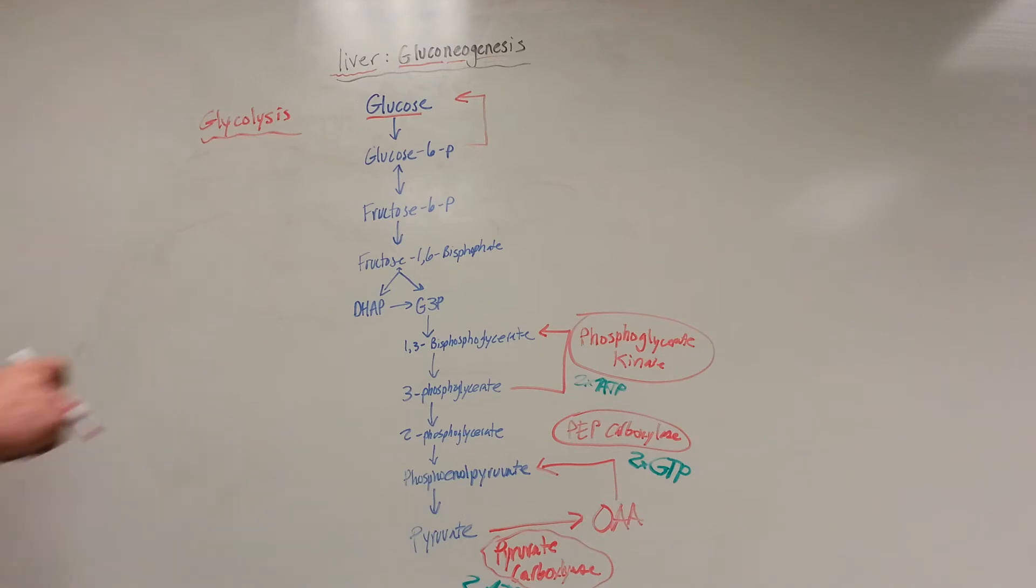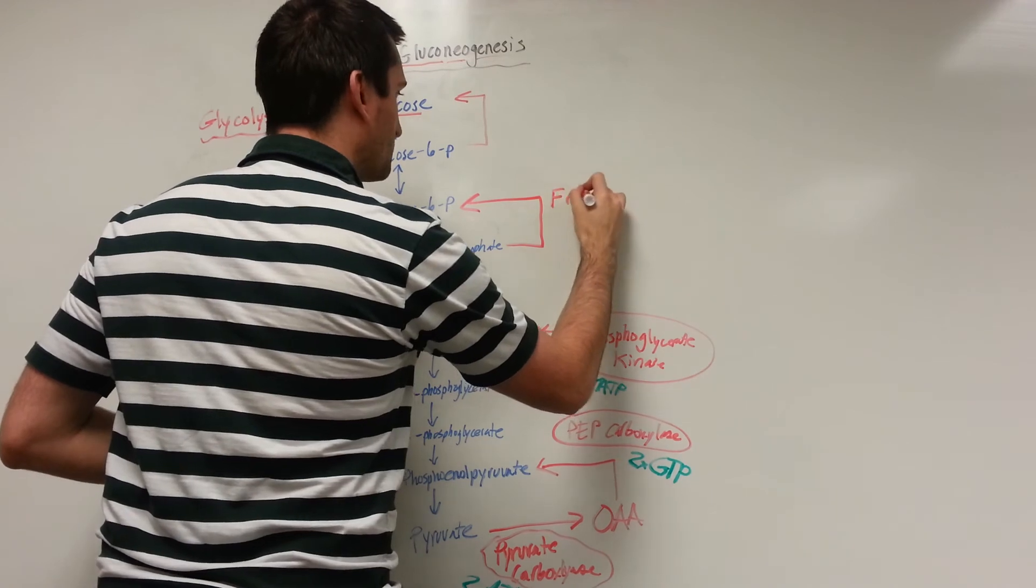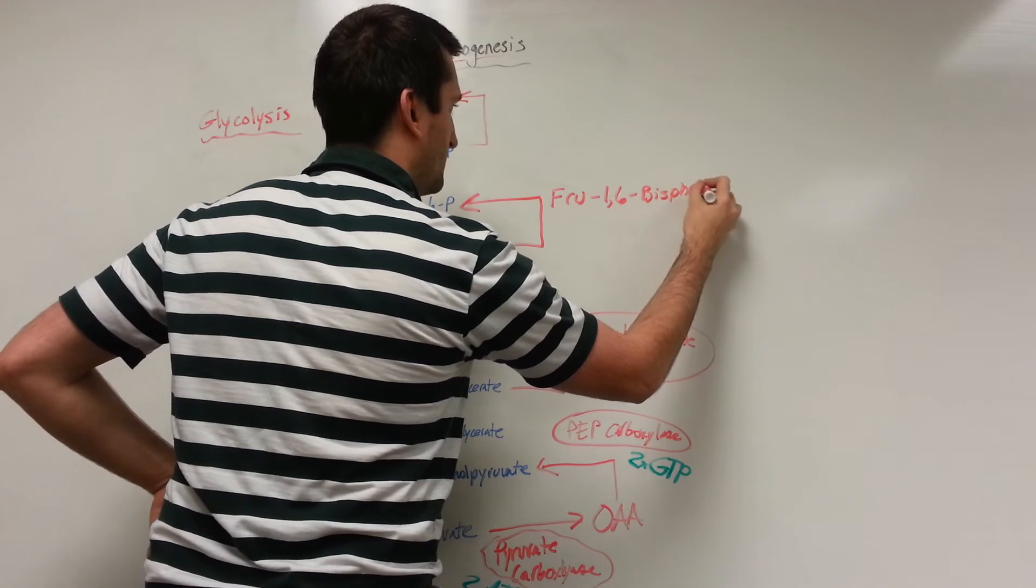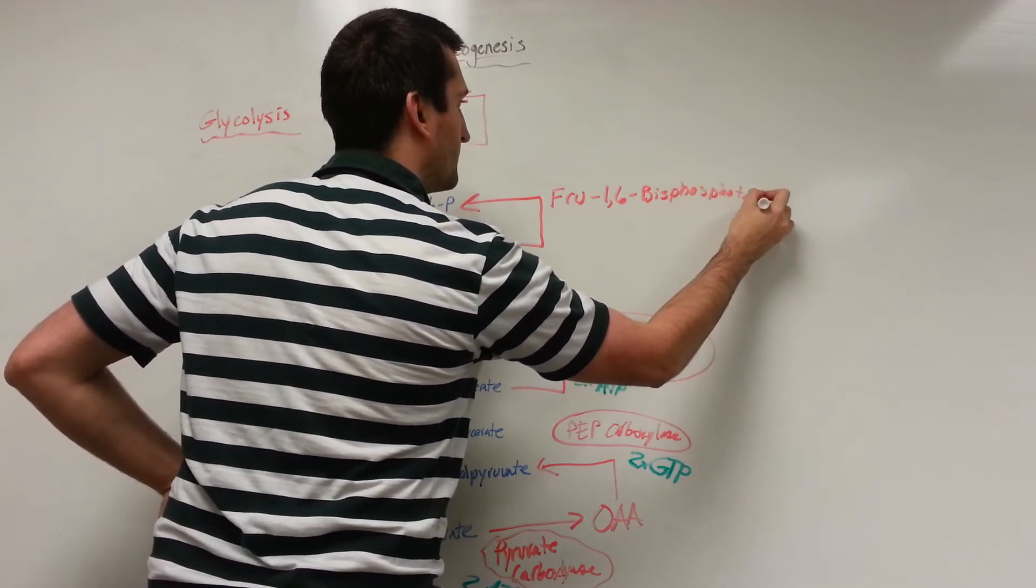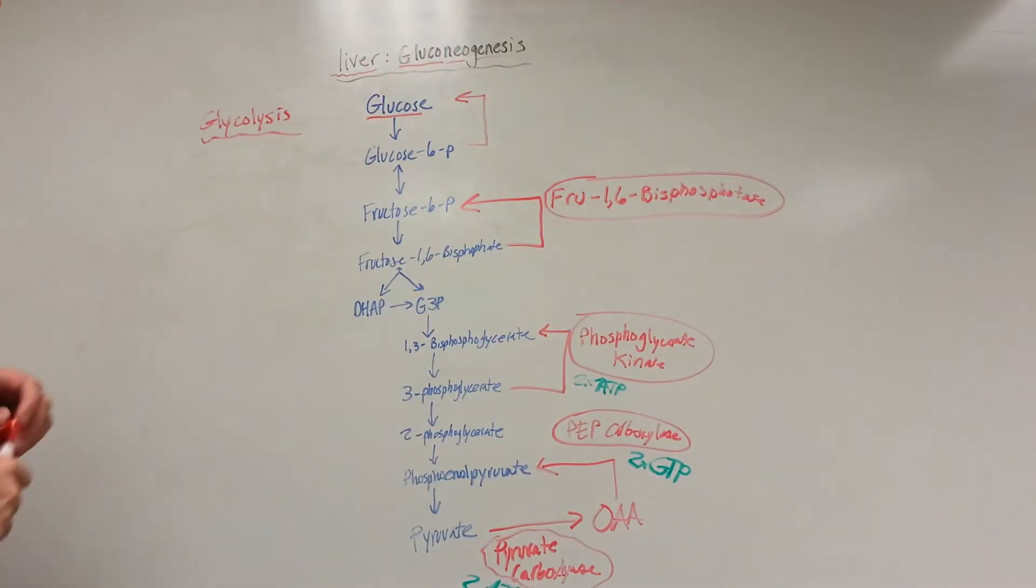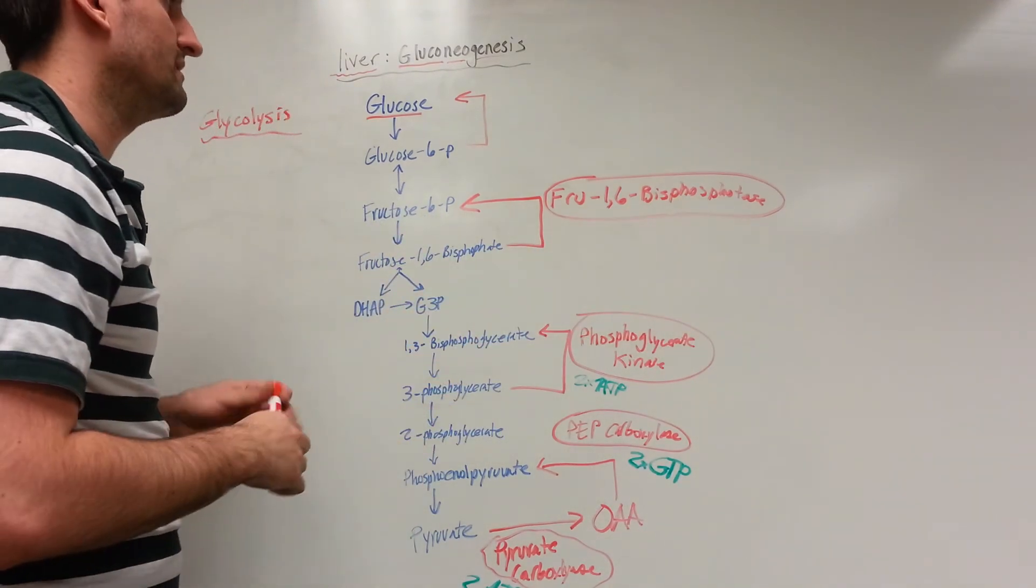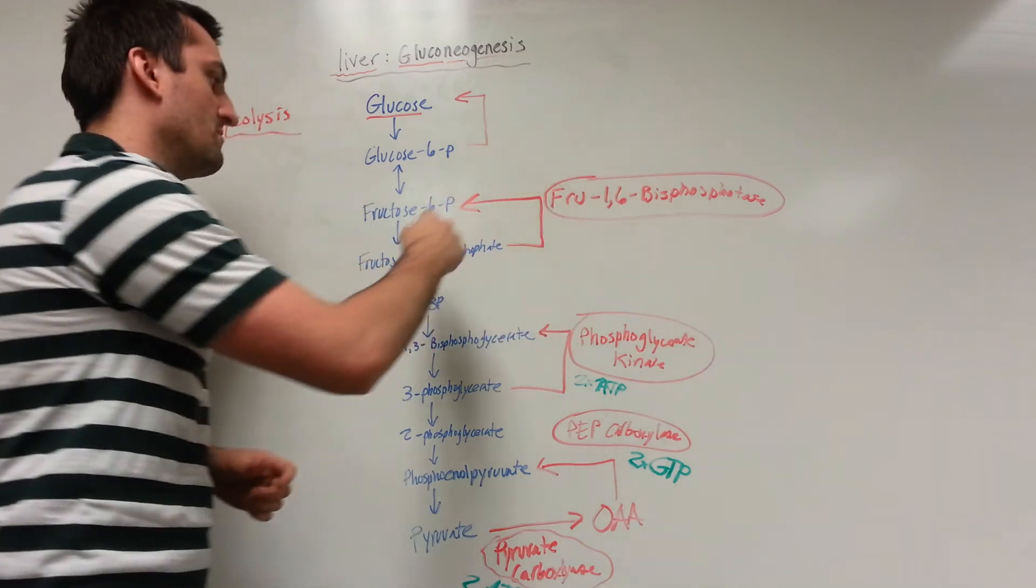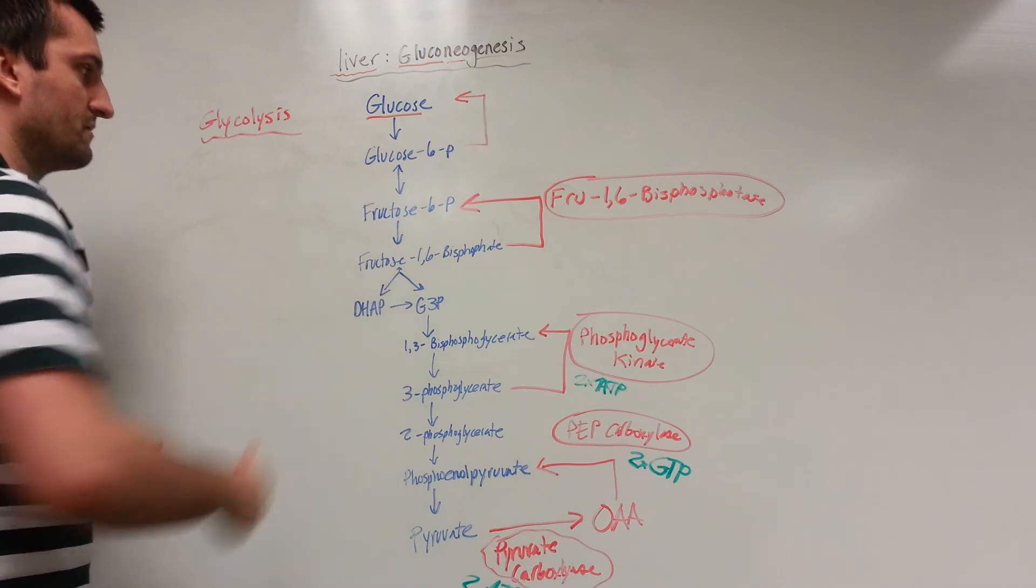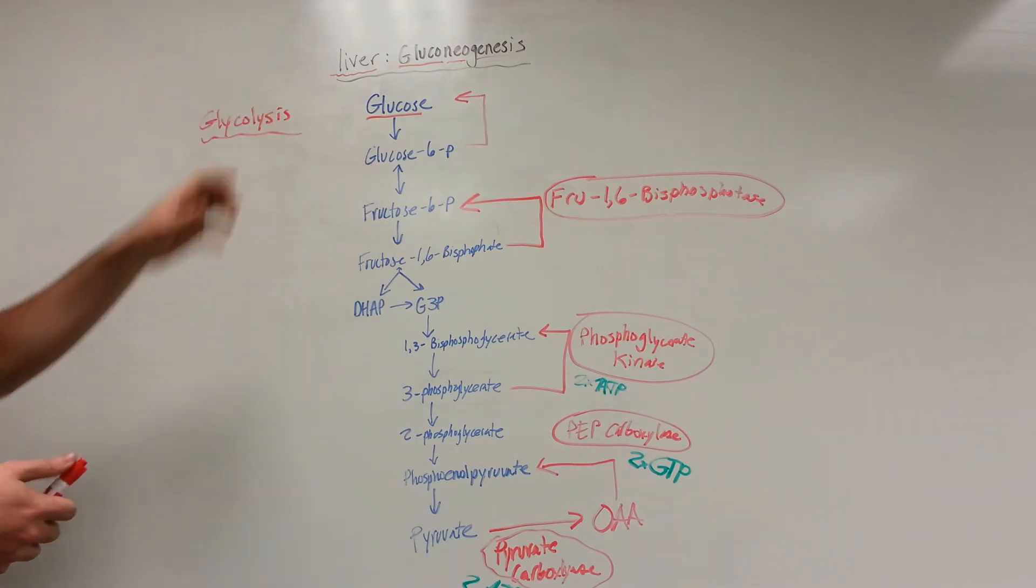The enzyme that we're going to need is fructose 1,6-bisphosphatase. So with the phosphatase, we're actually cleaving off a phosphate - that's what the phosphatase means. We're going to remove one of the phosphates, we're going to cleave off that one position phosphate, leaving us with fructose 6-phosphate.